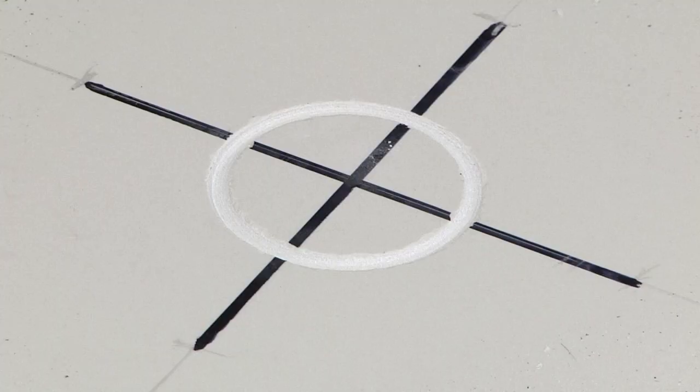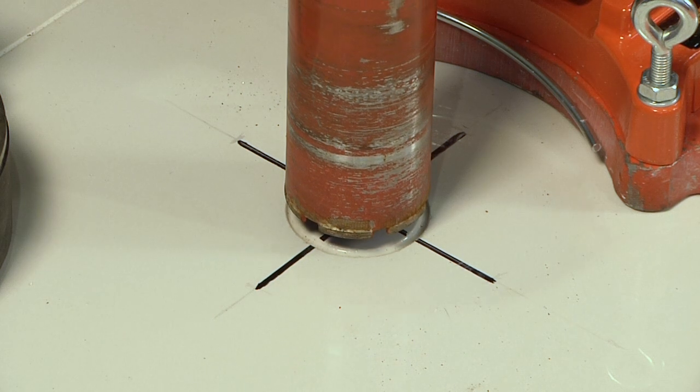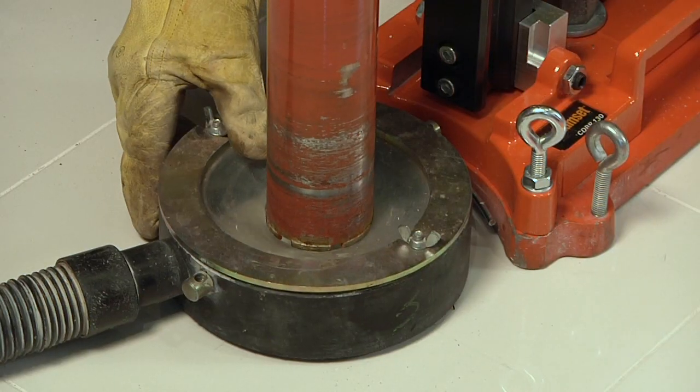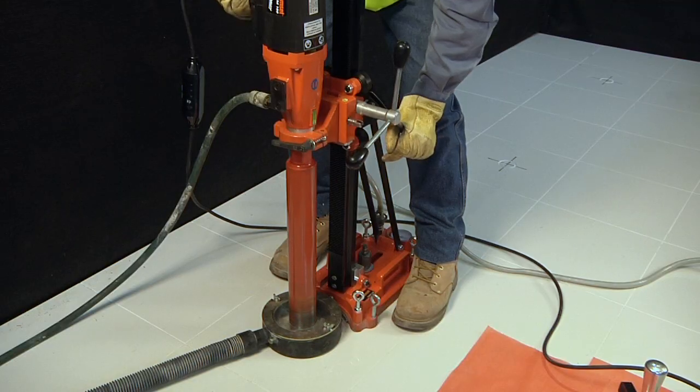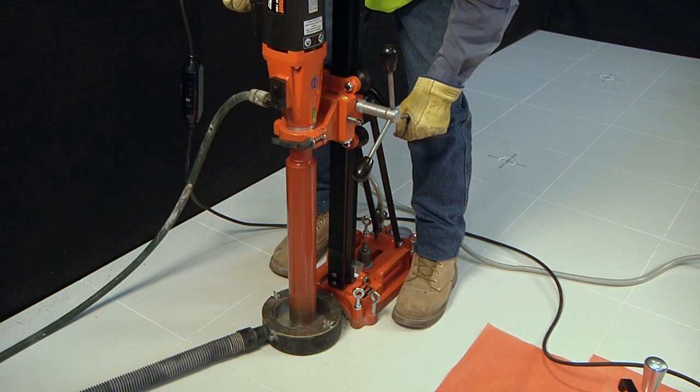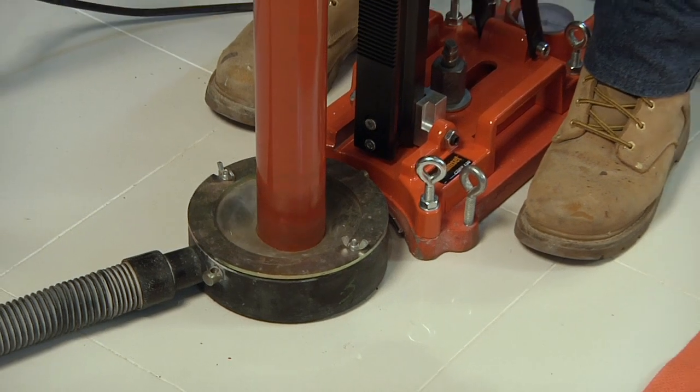The floor is then thoroughly cleaned and the integrity of the scored points checked and approved by the client. A diamond core bit is located directly into the score and then drilled to a depth of 85 millimetres. All wet debris is vacuum extracted during the coring process.